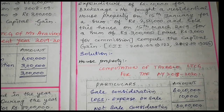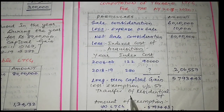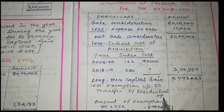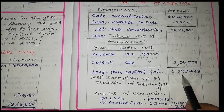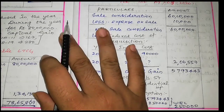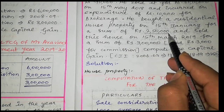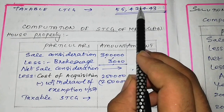The amount of exemption under Section 54 is the lower of: long-term capital gain of Rs. 57,93,443, or actual investment in the new house property of Rs. 2,50,000. Whichever is lower — Rs. 2,50,000 — is the exemption. So taxable long-term capital gain becomes Rs. 57,93,443 minus Rs. 2,50,000, which equals Rs. 55,43,443.